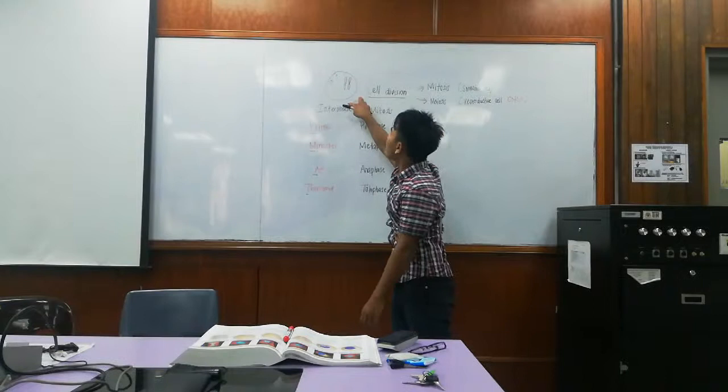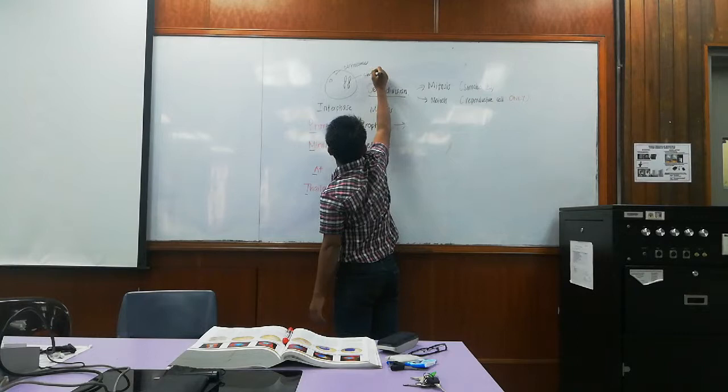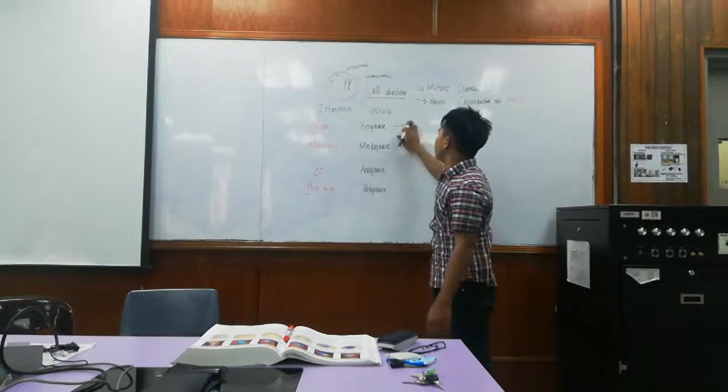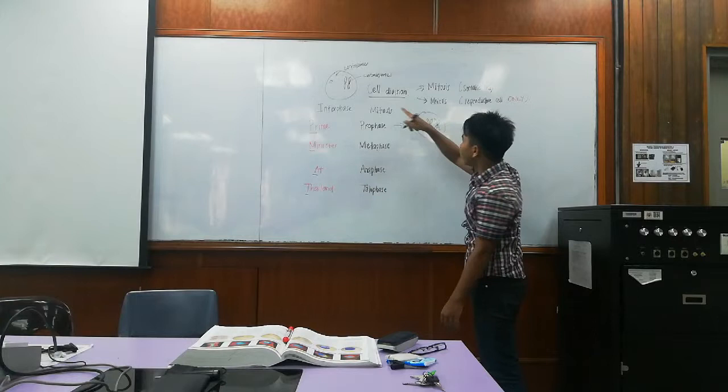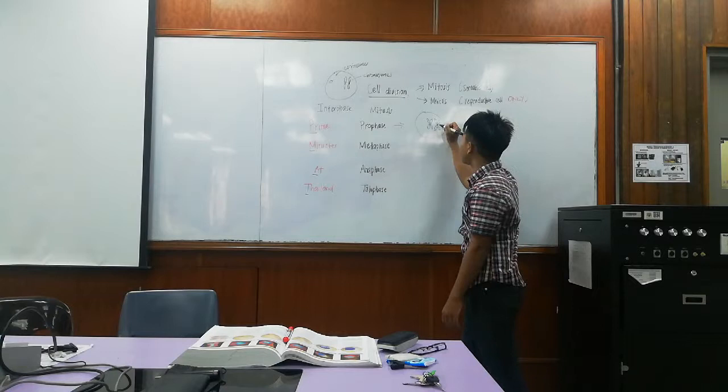Before mitosis, there will be interphase. For each eukaryotic cell, there will be several centrosomes and chromosomes. During prophase, these chromosomes will form two identical sister chromatids where the sister chromatids are joined at a point known as the centromere.